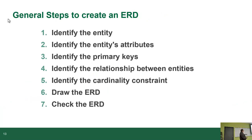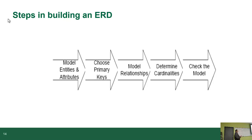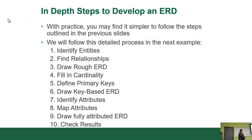When creating an ERD: identify the entities, identify the attributes and potentially the primary entity, figure out the relationships and constraints, draw the ERD, then check it. The process is: model the entities and attributes, choose your keys, create your relationships and cardinalities, then check the model.